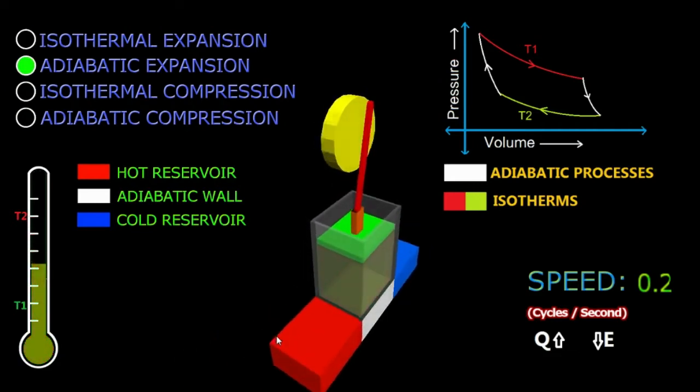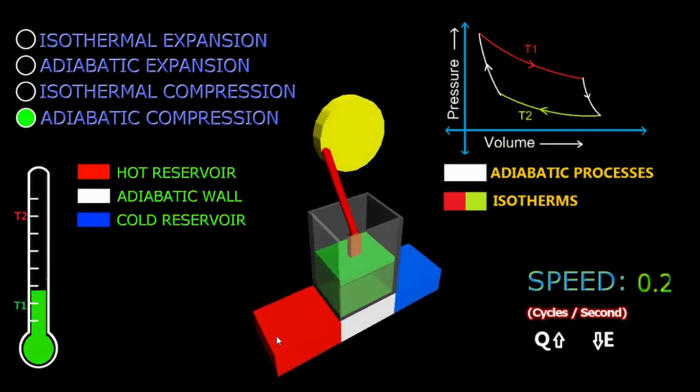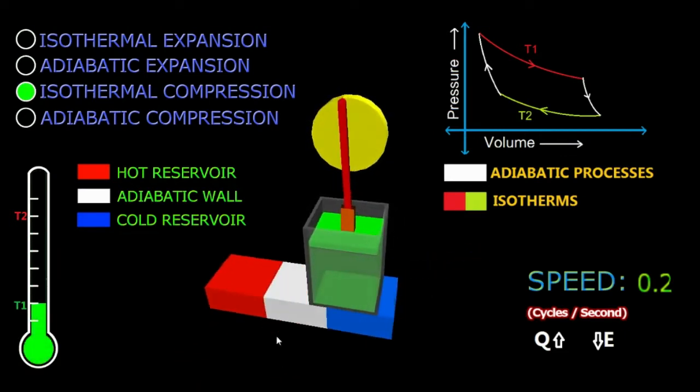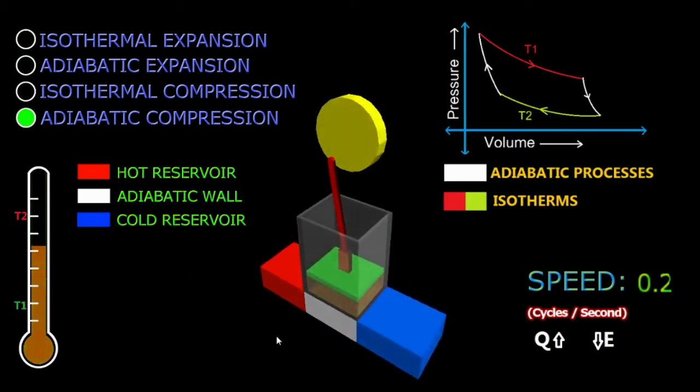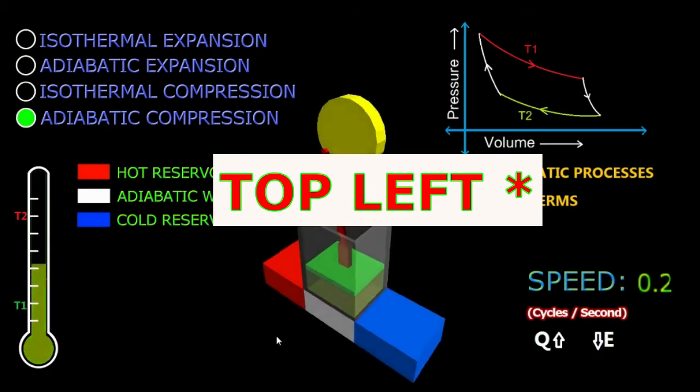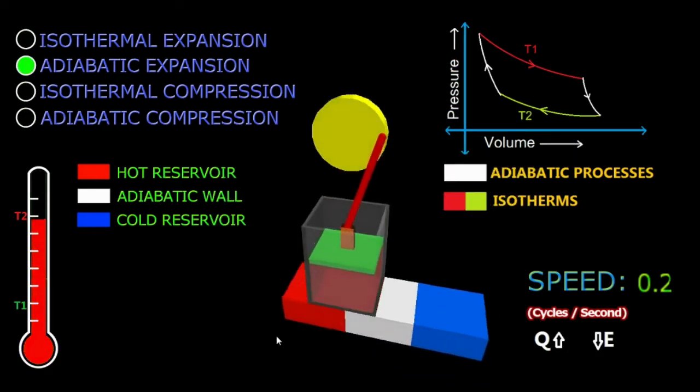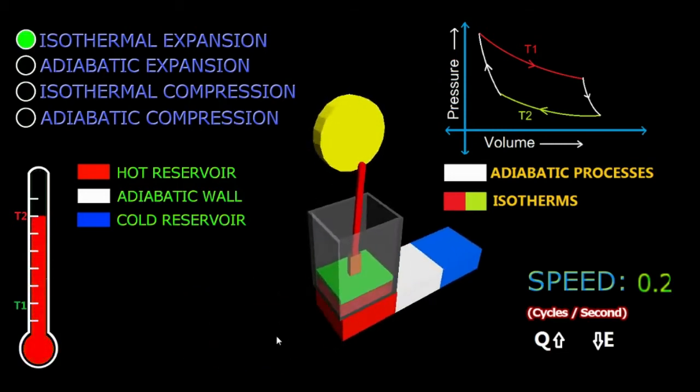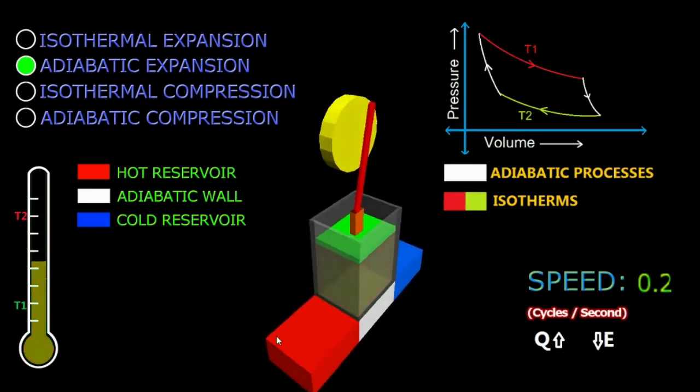This will help you have a better understanding of how the processes are carried out in the Carnot engine. On the top right corner of your screen you can see the processes are indicated. The green dot indicates the process that is currently being carried out. You can see the four types of processes.